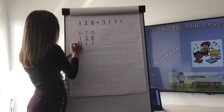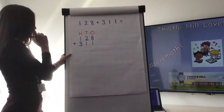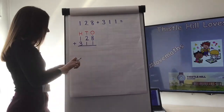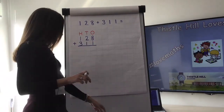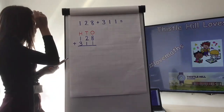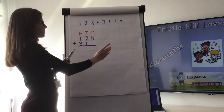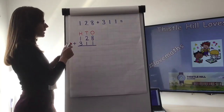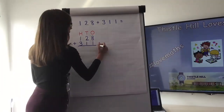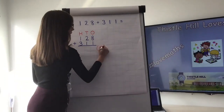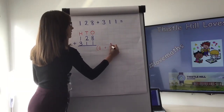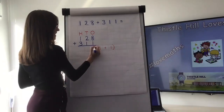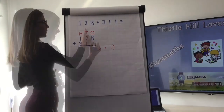I'm going to put a little addition symbol there, then draw a line underneath. When adding, we always start from the ones column, so we're going to start with our eight and add our one. Eight add one is nine.